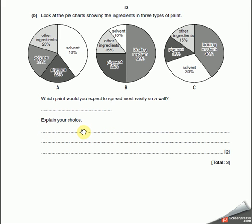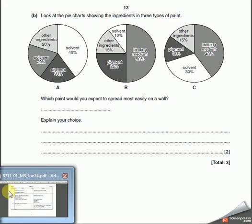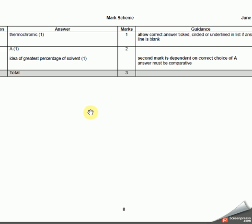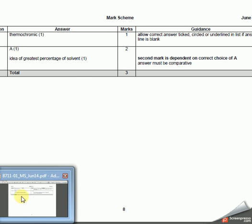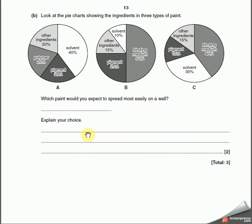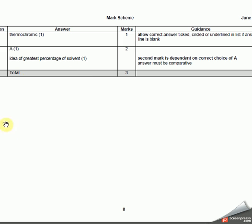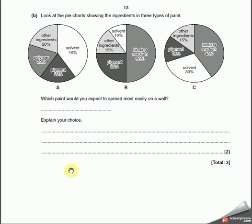Explain your choice. A has the most solvent in. I'd say it has 40% solvent, so it has the most solvent out of A, B, and C. And solvents help make the paint spread. Let's have a look at what it's saying. Thermochromic, idea of highest percentage of solvent. That was actually a lot more easy than we thought. You get one mark for saying A, and the second mark for saying that it contains most solvent and allows it to spread.